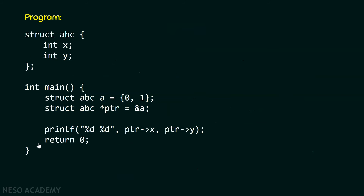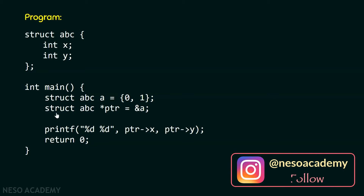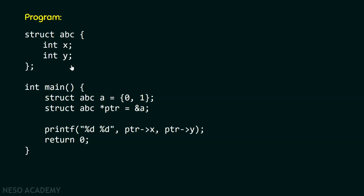Here is a program in which I have declared a struct abc which consists of two members x and y, both of integer type. Within the main function, I have a variable a of type struct abc. Because I have a variable of type struct abc, I can access these members using this variable — assigning values, where x gets value zero and y gets value one.